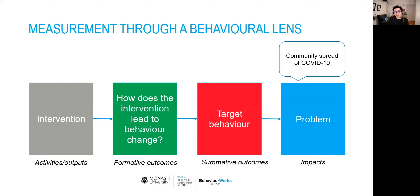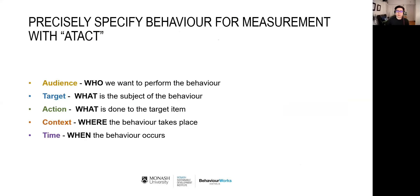To do that, we can use a framework called ATACT — being clear about the Audience, Target, Action, Context, and Time of the behavior. Who we want to perform the behavior, what it is they're doing, where they're doing it, and when. For example, a behavior for washing your hands would need to be specified very clearly: a visitor to a home washing their hands for 20 seconds in the bathroom sink once they enter the premises. Changing pieces of the ATACT changes the behavior — compare that to home cooks washing vegetables under running water in a kitchen sink while preparing a meal. The audience and context differ, even though the action — hand washing — is the same.